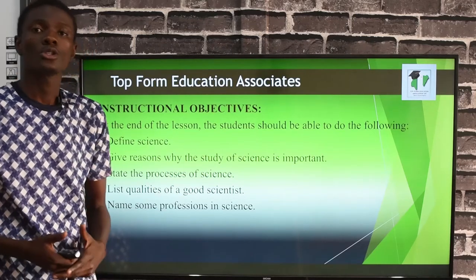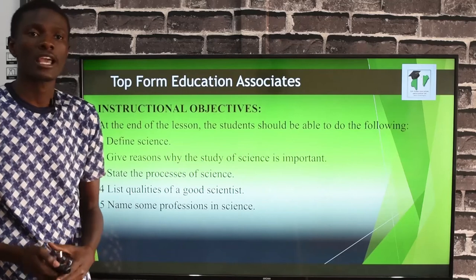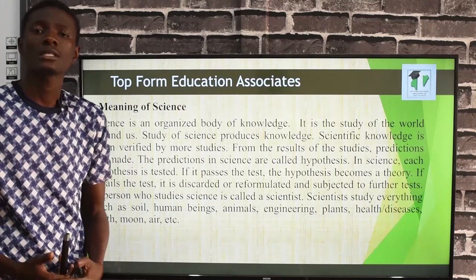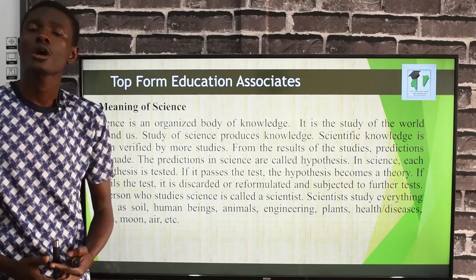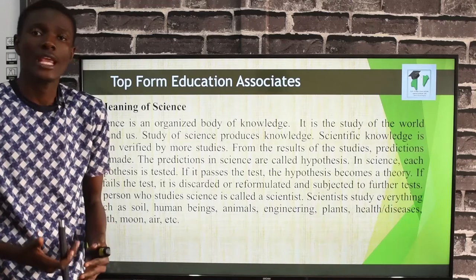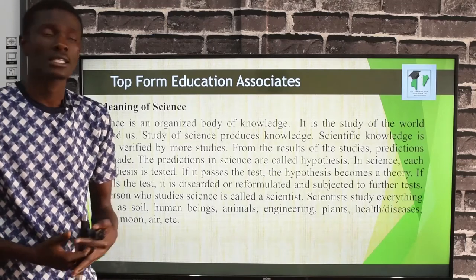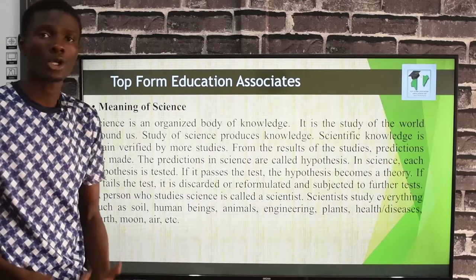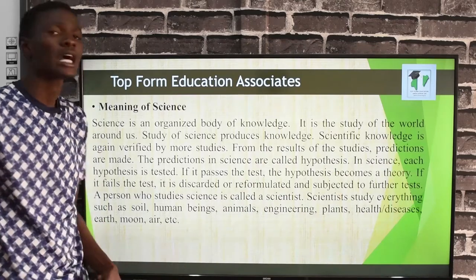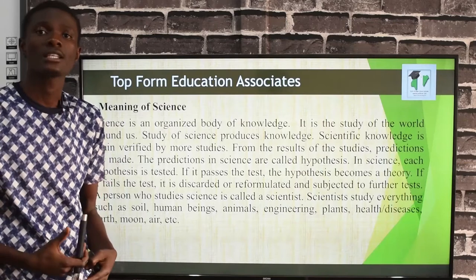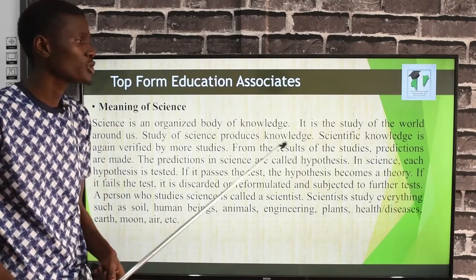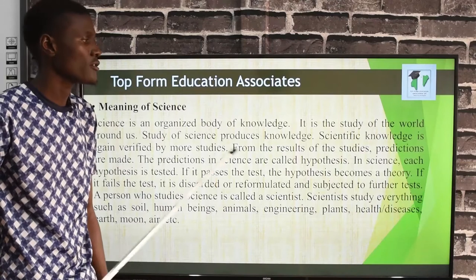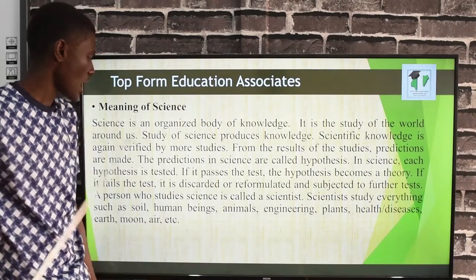The meaning of science — what is science? Many times things happen around us and we don't know what caused them. In the study of science, we say science is an organized body of knowledge. It is the study of the world around us. The study of science produces scientific knowledge, which is verified by more studies, and from the results, predictions are made.